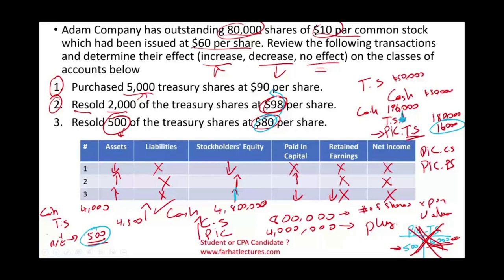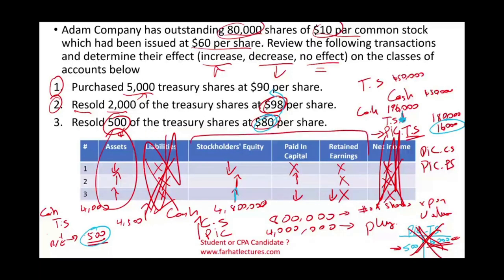Retained earnings can only be affected downward in treasury stock transactions — it can never go up. Net income and liabilities are never affected in any treasury stock scenario. What's affected are assets, specifically cash, and equity accounts including paid-in capital and retained earnings. Treasury stock is an important concept in your accounting course and on the CPA exam. Visit Farhat Lectures for additional MCQs, true-false questions, and resources to help master this topic.